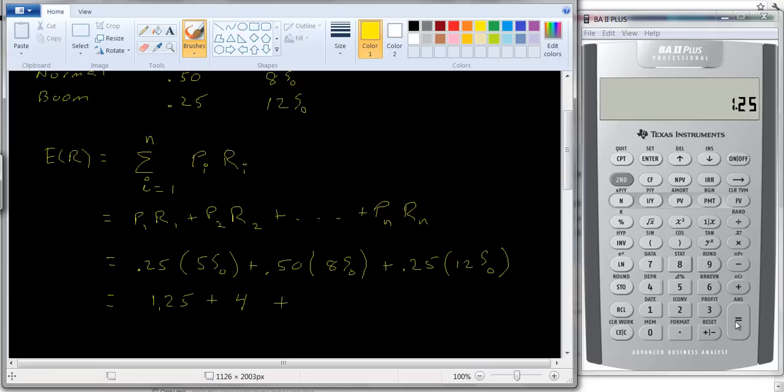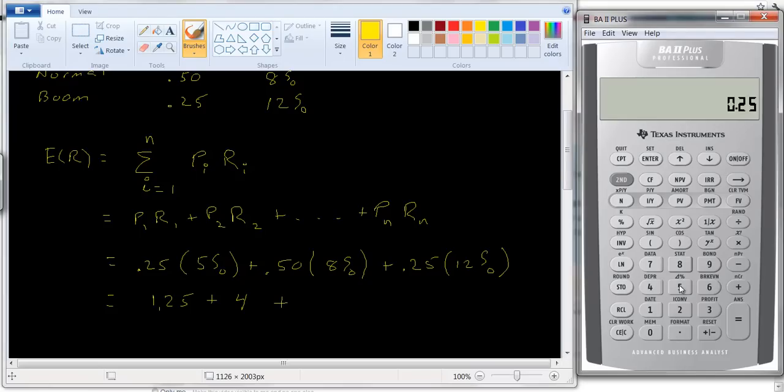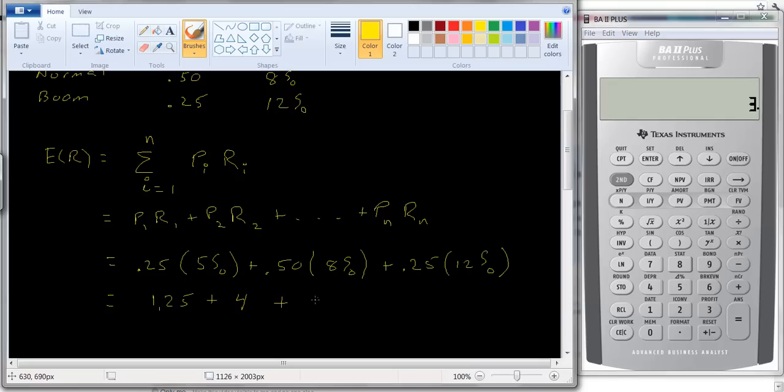0.25 times 5 is 1.25. Plus 0.5 times 8 is 4. And 0.25 times 12 equals 3. We can add those together: 4 plus 3 is 7, plus 1.25 is 8.25%.